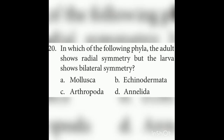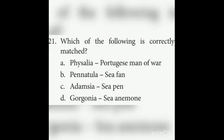Twentieth question: In which phylum does the adult show radial symmetry but the larva shows bilateral symmetry? The answer is Phylum Echinodermata — the best example is starfish. Twenty-first and last question: Which of the following is correctly matched? The answer is option A — Physalia is Portuguese man-of-war. At the end of each phylum, you can see several examples with their zoological and common names given — please go through those.